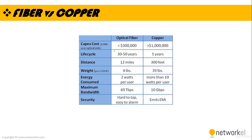Comparing fiber optic to copper cable: optical fiber can provide communication up to 12 miles while copper provides up to 300 feet. Fiber weighs about 4 lbs compared to 39 lbs for copper. The maximum bandwidth for optical fiber is 69 terabits per second, much higher than copper's 10 gigabits per second. Additionally, optical fiber is hard to tap and easy to alarm, while copper emits electromagnetic interference.